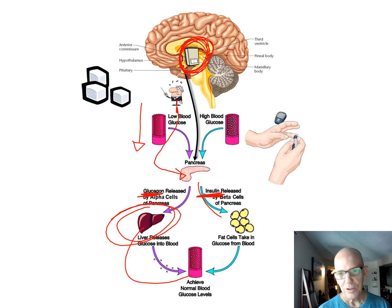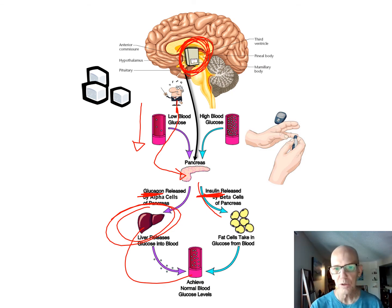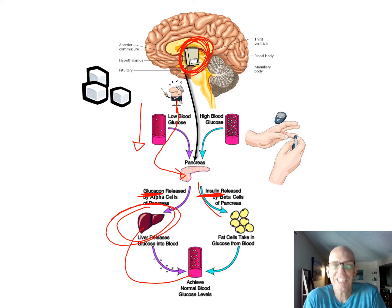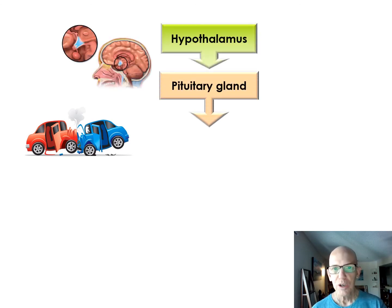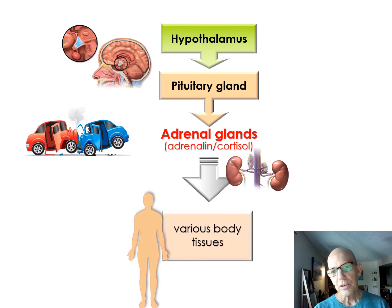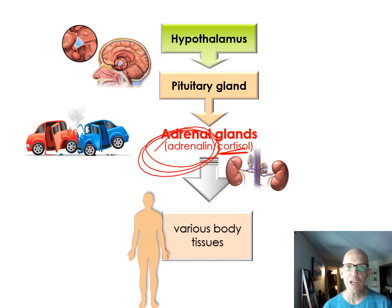Another example: if you get into a near-crash on the freeway, your hypothalamus detects a threatening situation and the pituitary tells your adrenal glands to release adrenaline and cortisol. Adrenaline gives you a burst of energy — that's fight or flight. Your eyes dilate, you breathe fast, your heart rate spikes, blood courses through your body. This is what kick-starts the sympathetic nervous system division.